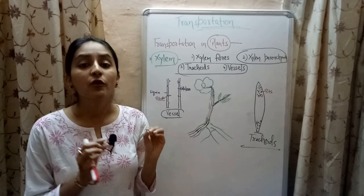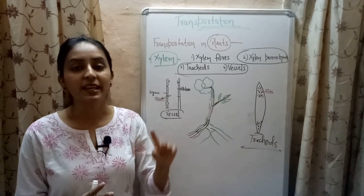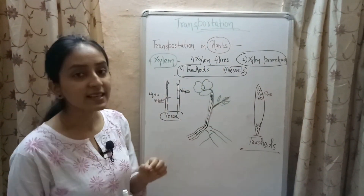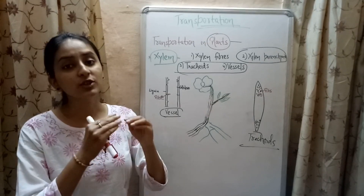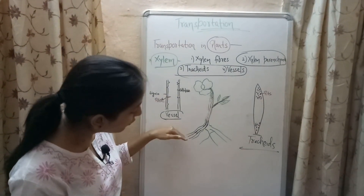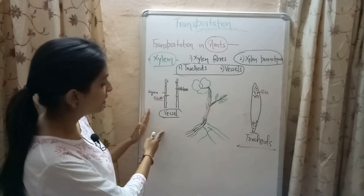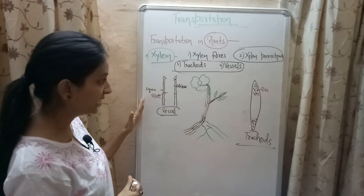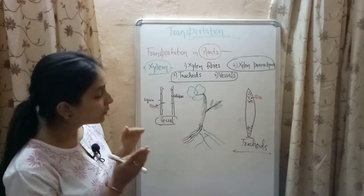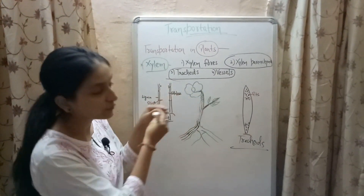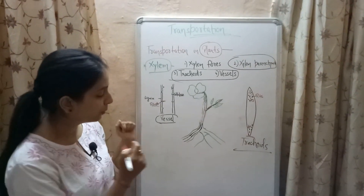Xylem vessels and tracheids are the conducting elements of xylem, meaning these two components help in carrying water and minerals in a plant. Xylem vessels are long tubes which act as drain pipes and help in transporting water and minerals from the root region to other parts of the plant. The cell wall of xylem vessels is made up of cellulose and lignin, and the presence of lignin provides strength to the stem where the xylem vessels are present.